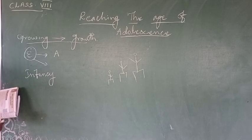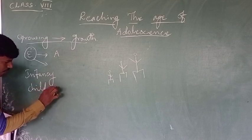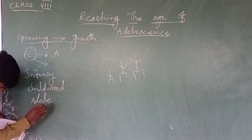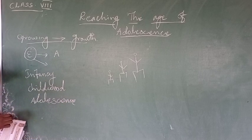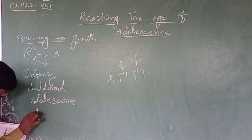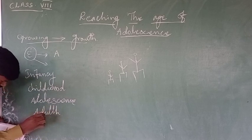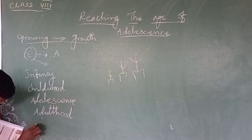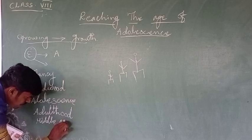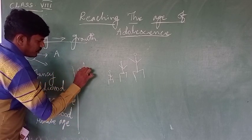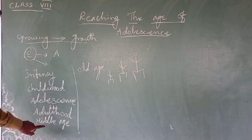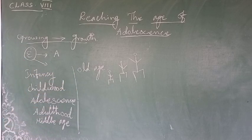The first stage is infancy and the second is childhood. The stages of human development are: Infancy, Childhood, Adolescence, Middle Age, and Old Age. This is the sequence of the human developmental stages.